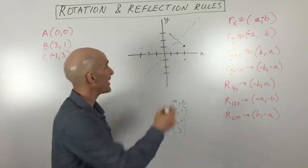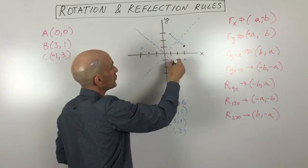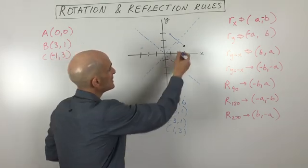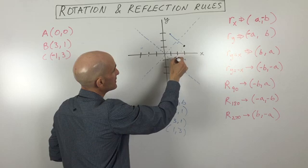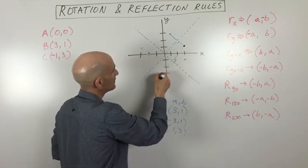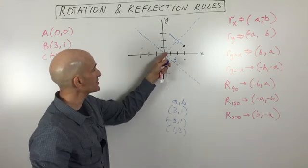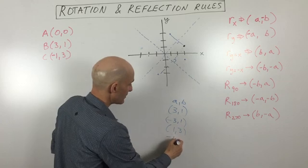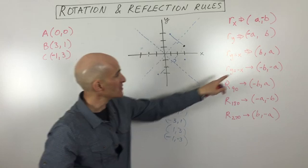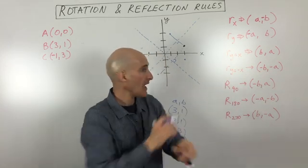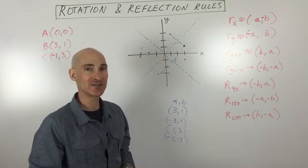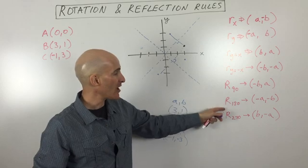If we look at the line y = -x, that's a line with a slope of -1, going down at a 45-degree angle. When you reflect over this line, measuring the perpendicular distance and going the same distance on the other side, the new coordinates are (-1, -3). So going from (3, 1) to (-1, -3), we switched the x and y coordinates and made them both the opposite signs.